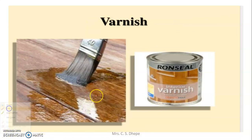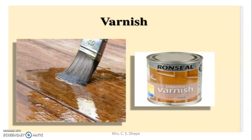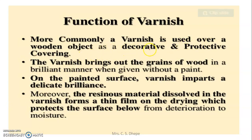Varnish gives a somewhat transparent but glossy surface. The functions of varnish: it is used over a wooden object as a decorative and protective covering. If you have furniture or a main door, you apply varnish so that you get a decorative, glossy surface. The other function is protective covering — protection from wear and tear.